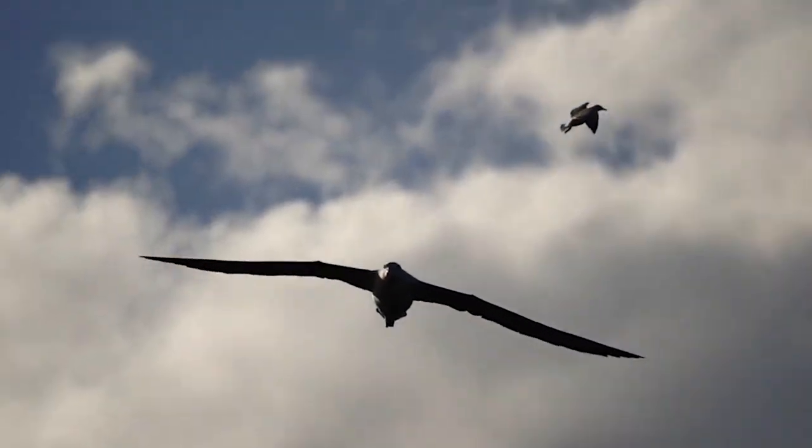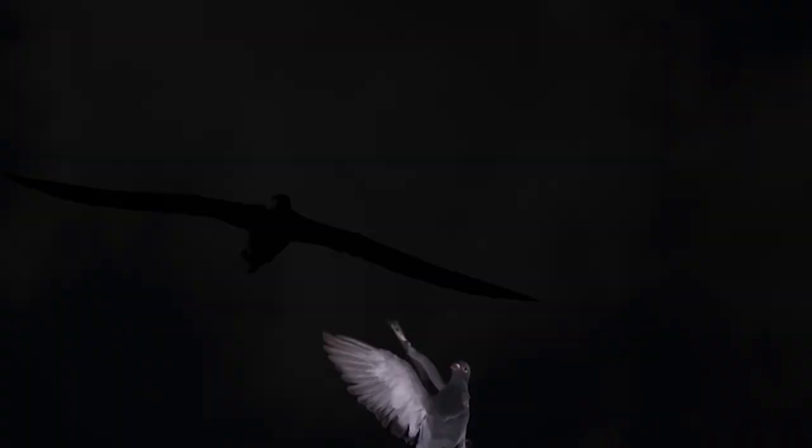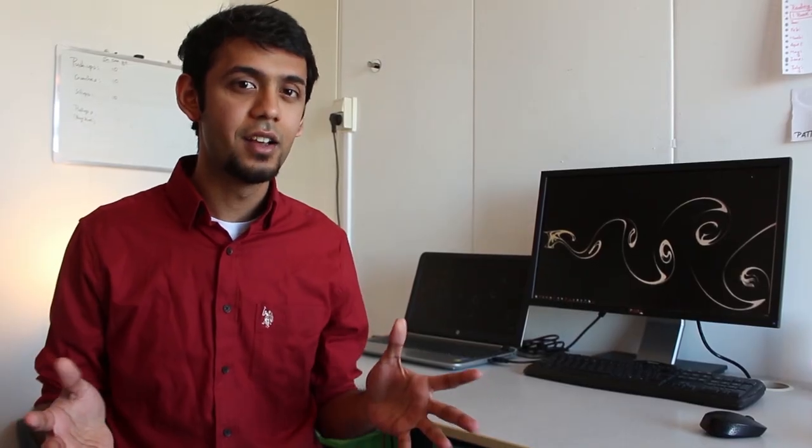Now bird flight also has different regimes. You have gliding flight, flapping flight, and bounding flight, and the physics involved in all three are vastly different. In gliding flight, the principles of aerodynamics are similar. And here, wing tip vortices are detrimental to the lift generated by birds. In fact, certain species of birds use their feathers as wingtips in gliding flight.